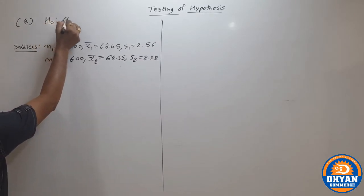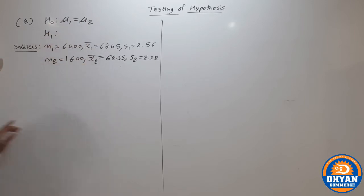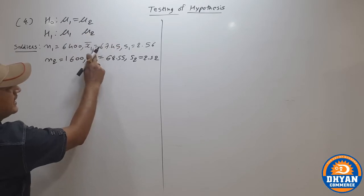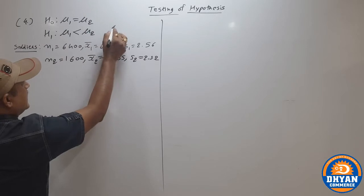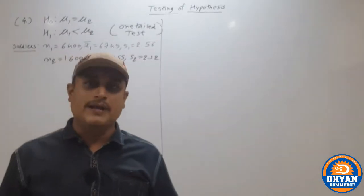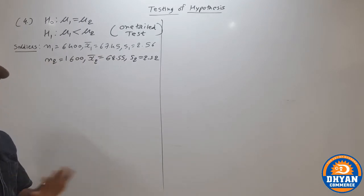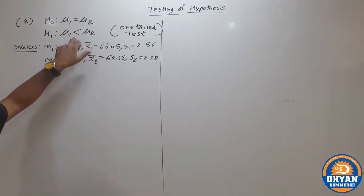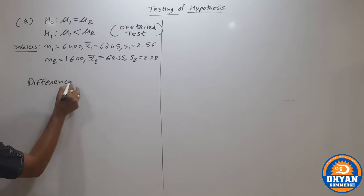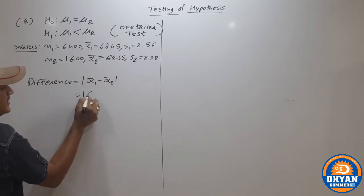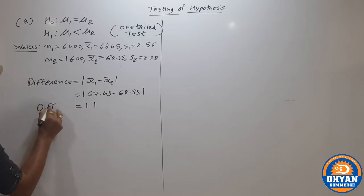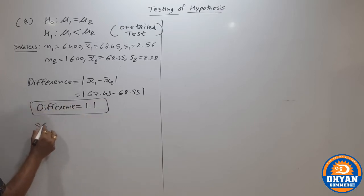First, H0: mu1 = mu2. For H1, we compare x1 bar and x2 bar. Since x1 bar is less than x2 bar, mu1 should be less than mu2 — this is a one-tailed test. Note x1 bar < x2 bar in brackets. Next, we find the difference between two sample means: 67.45 minus 68.55 = 1.1 (modulus value, so positive 1.1).